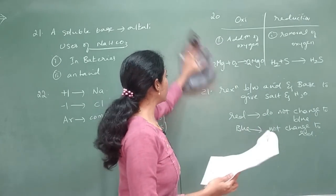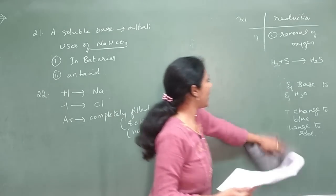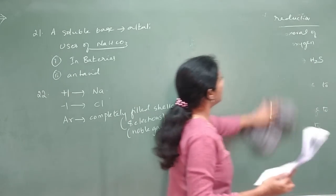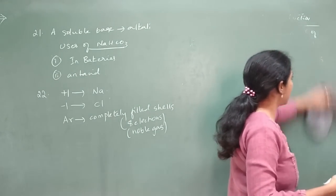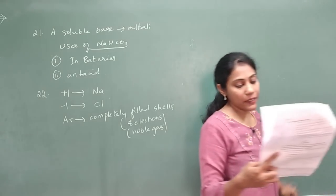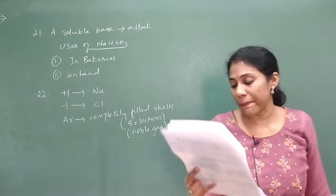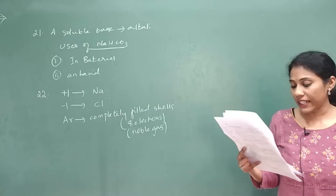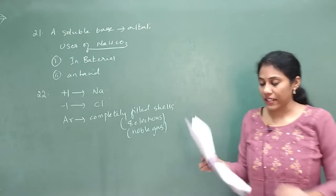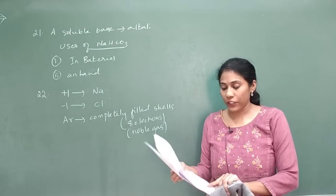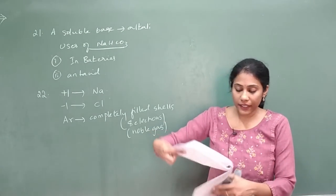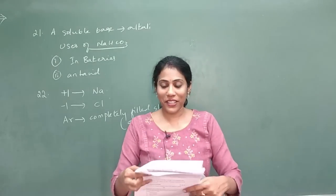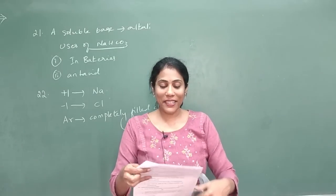Question 23 is a diagram from chemistry worth three marks — diagram showing the arrangement of apparatus to demonstrate that an acid solution in water conducts electricity. Draw this carefully by referring to your textbook.